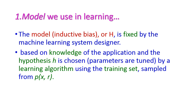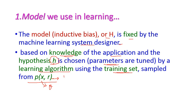The model is selected and fixed by the learning system designer based on knowledge of the particular application. The hypothesis is then chosen with respect to the parameters from the learning algorithm by using the training set. Based on the training set, we select the hypothesis where x samples with r=1 are in the class and r=0 means x is not in that class.